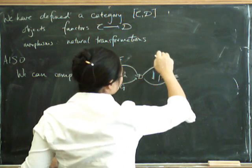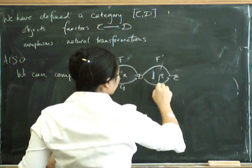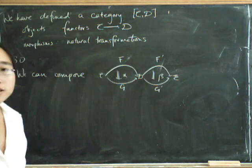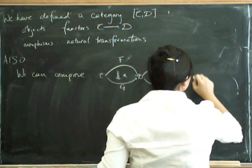And this goes from F to G. And maybe this goes from F prime to G prime. And so what are we expecting?